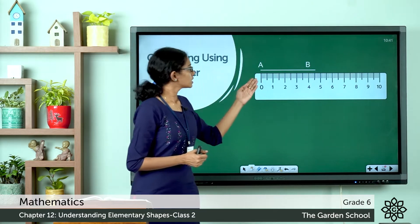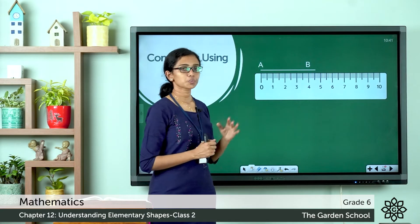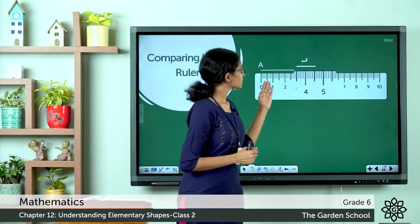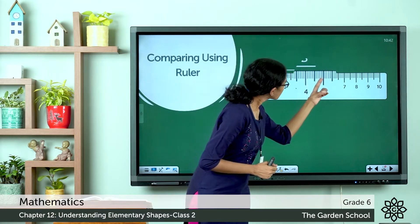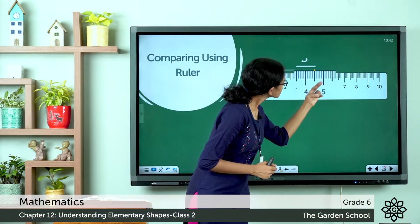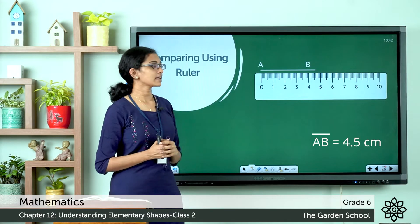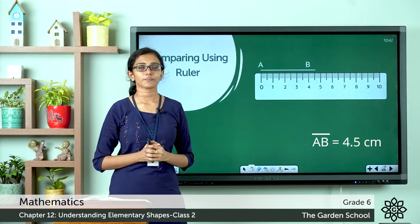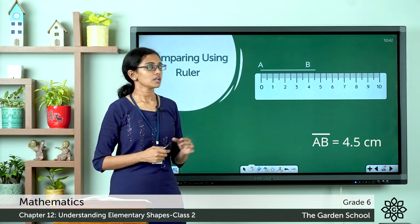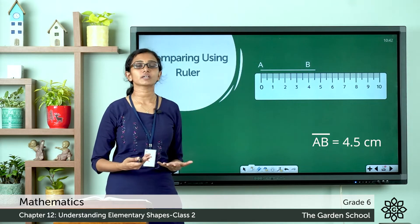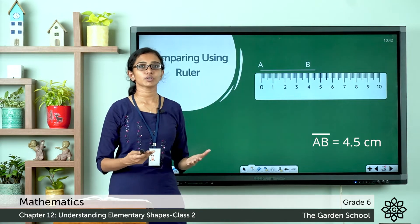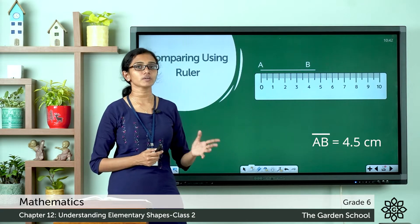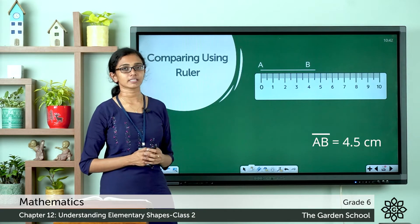The zero marking coincides with point A of the line segment, and it extends to 4.5. So the length of line segment AB is 4.5 centimeters. You can measure different line segments using a ruler to compare their lengths. This is one method of comparing line segments.